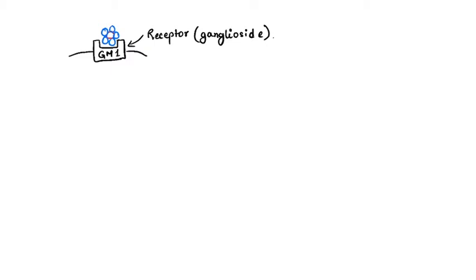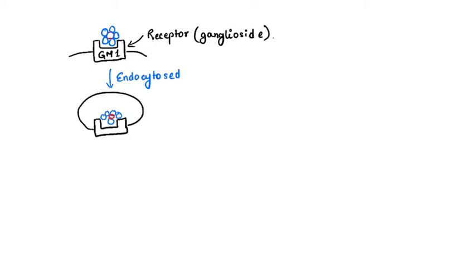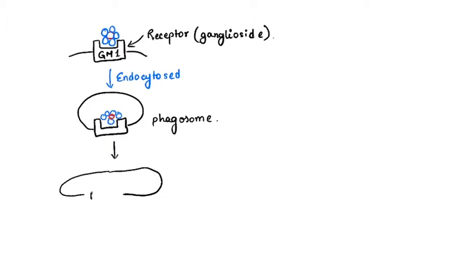This toxin is endocytosed and it comes into a vesicle containing the GM1 receptor to which it was attached. This endocytosed vesicle then fuses with an endosome and forms a phagosome. After the phagosome is formed, it comes and fuses with the ER.